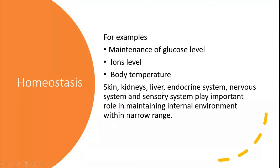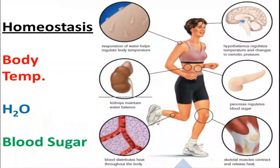There are kidneys, liver, and the endocrine system. Hormonal regulation through homeostasis is maintained. Mostly hormones are related to the endocrine system. The nervous system works as a thermostat. The body temperature is maintained. There is a sensory system which is sensing the external stimuli. They all play an important role in maintaining the internal environment within a narrow range — at the optimum value necessary for the proper functioning of the organism.